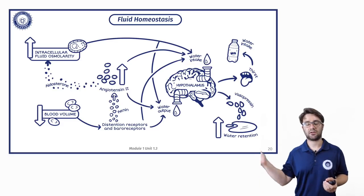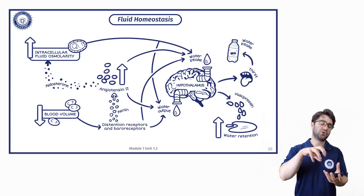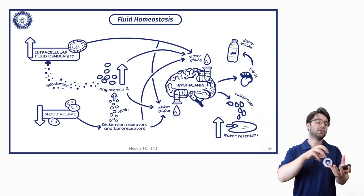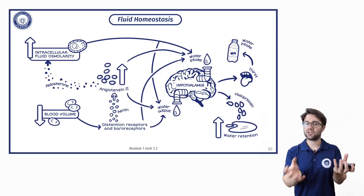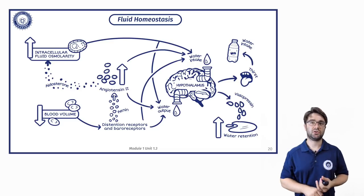We get thirsty, we then go and drink more water, and then we look to bring the solute concentration from inside our cells back down, because remember that those solutes will move from inside the cell, which is an area of high solute concentration, to the bloodstream—outside of the cell—which is an area of low solute concentration.